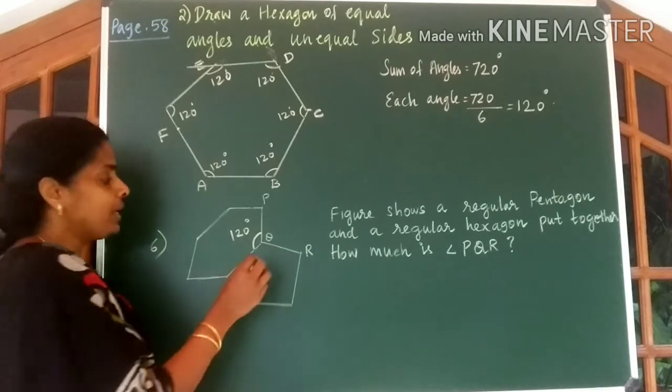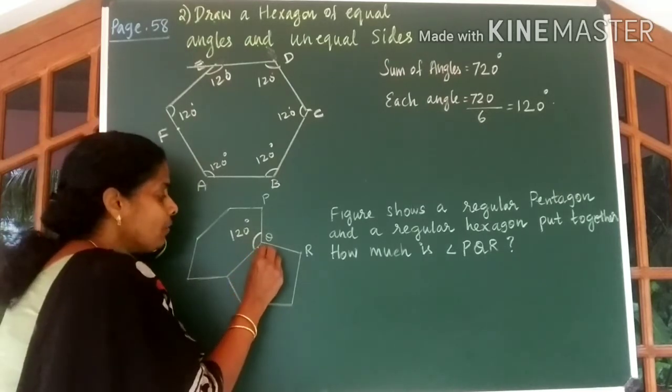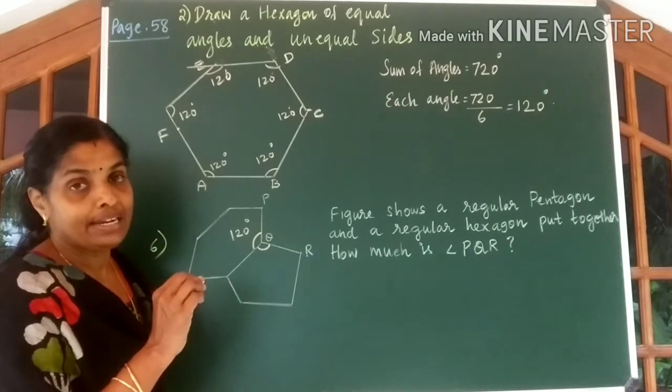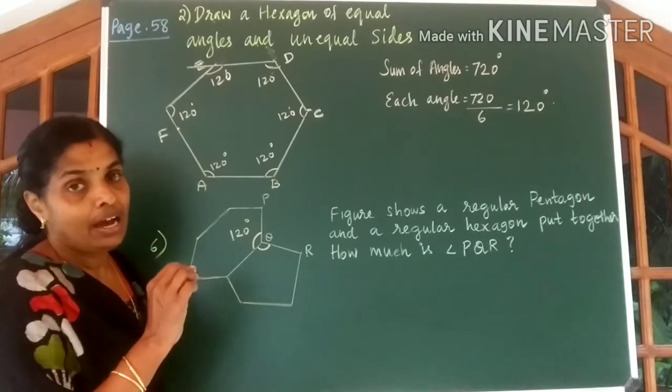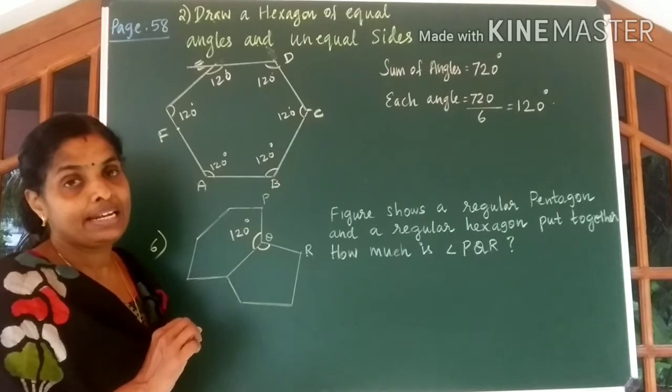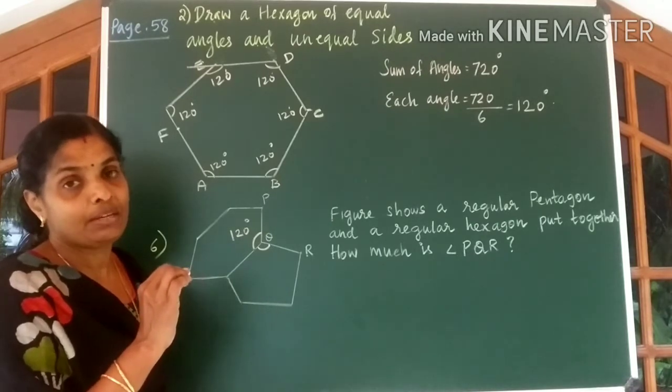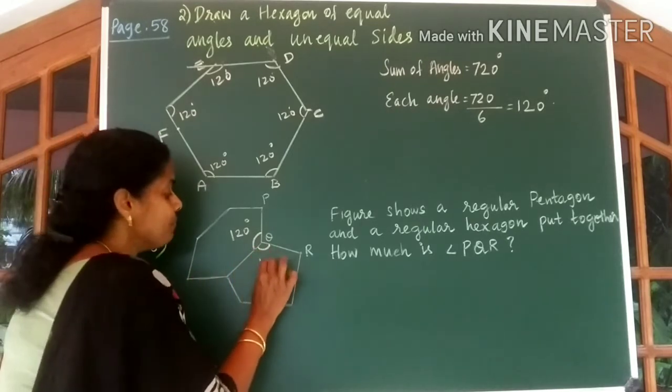And also we know each angle of a regular pentagon to be equal to 108 degrees. How did you get 108? It is 540 divided by 5. So you get 108.